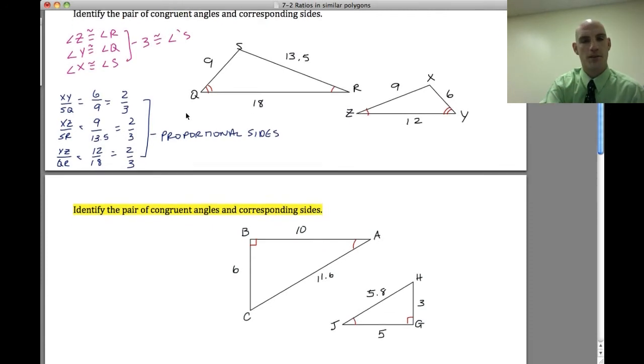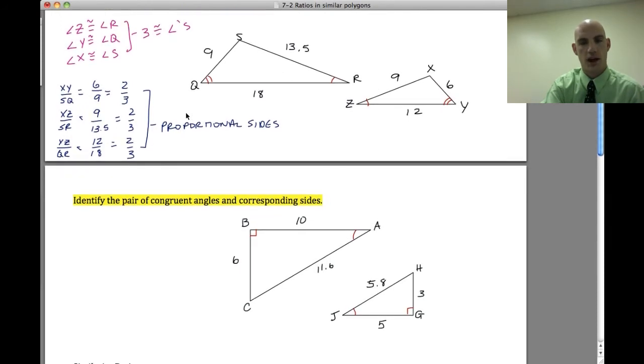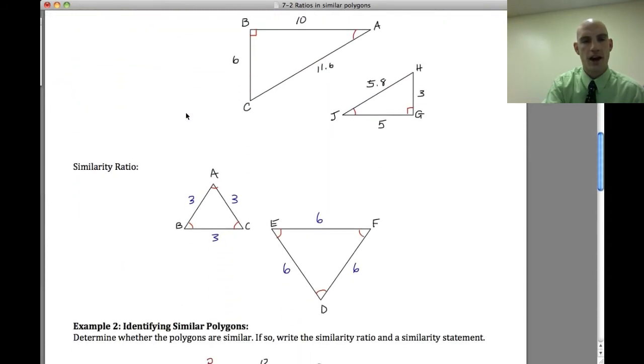So, in the second example here, I want you to try this one. Okay? So, what I want you to do is identify the pairs of congruent angles and corresponding sides. So, do exactly like I did up there. Alright? So, you can go ahead and pause and do that one. We'll talk about it in class.